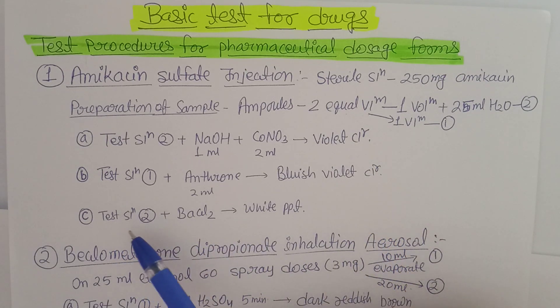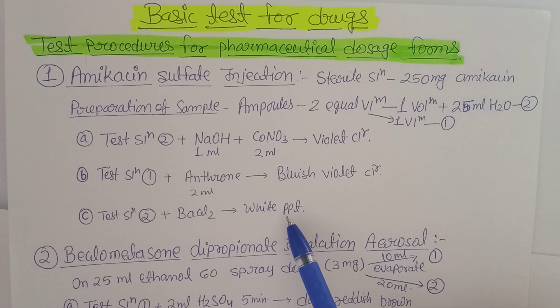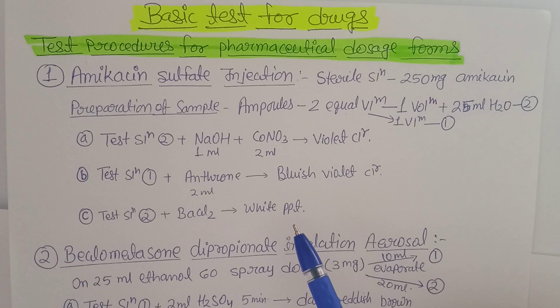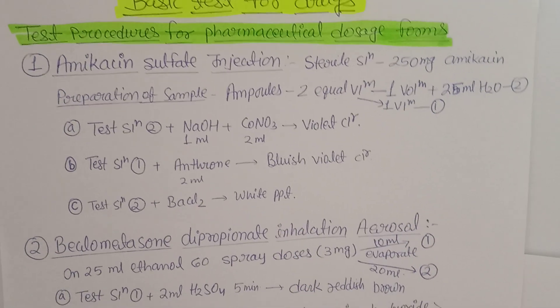For the third test: to Test Solution 2, add barium chloride. This gives a white precipitate, confirming the presence of amikacin sulfate.